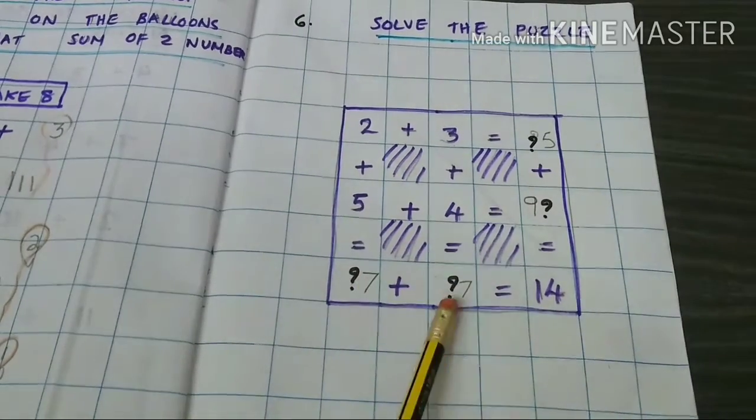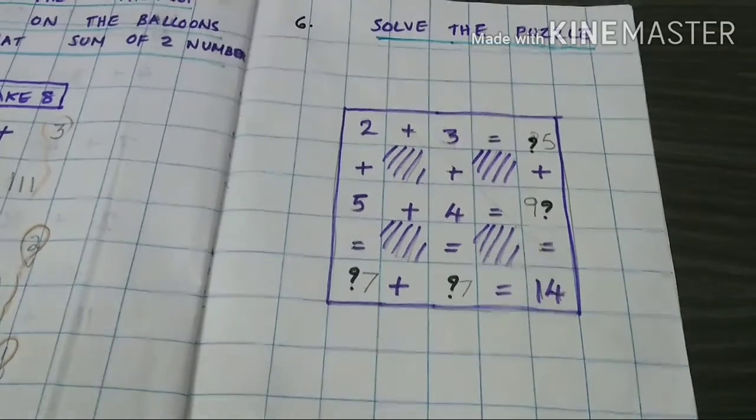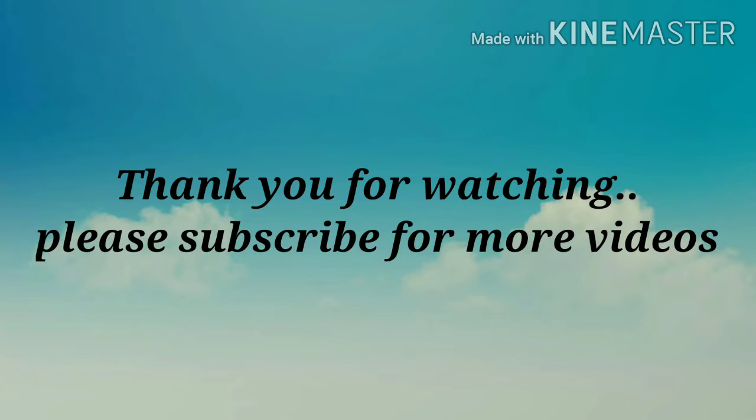So 7 plus 7 equal to 14, and 5 plus 9 equal to 14. 5 plus 9 equal to 14. Thank you.